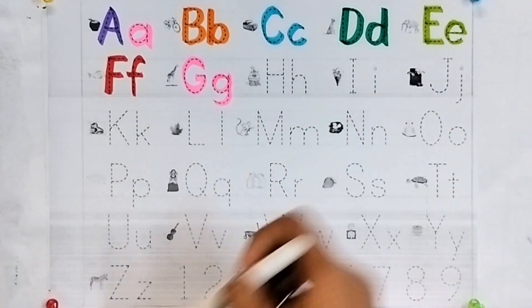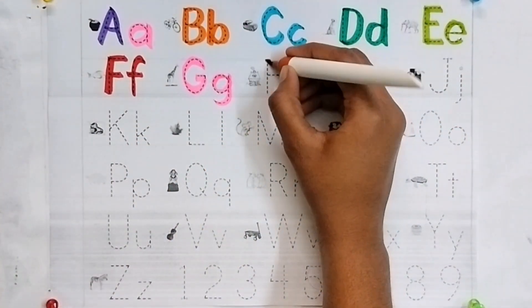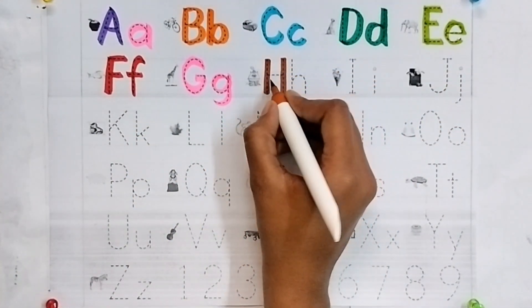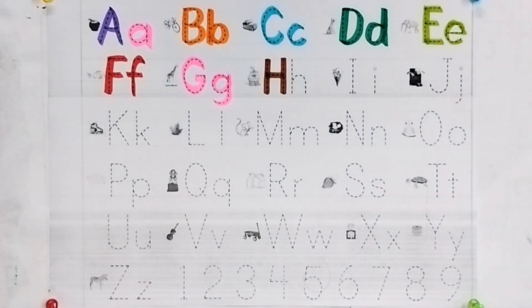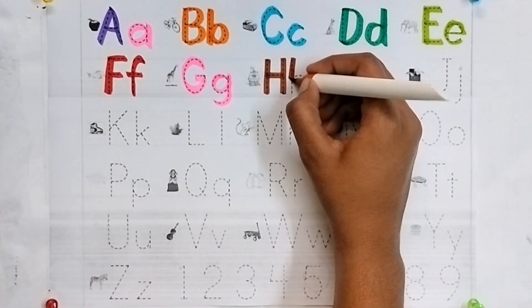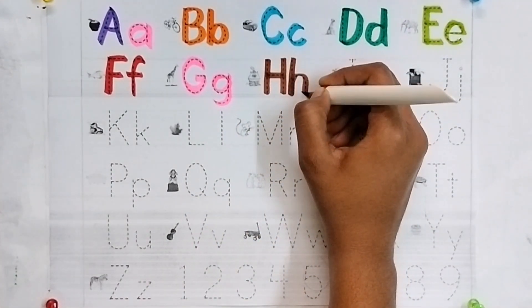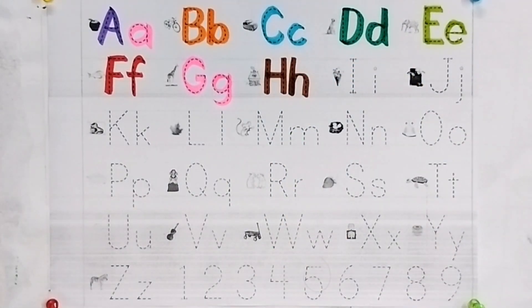Brown color. H. H for house. Small h. H for hen.